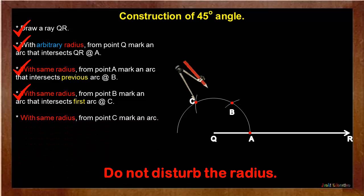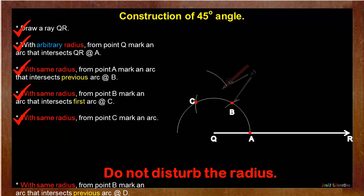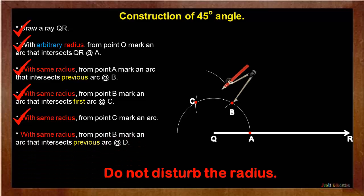With same radius from point C, mark an arc as shown in the video. After that, with same radius from point B, mark an arc that intersects previous arc at point D.